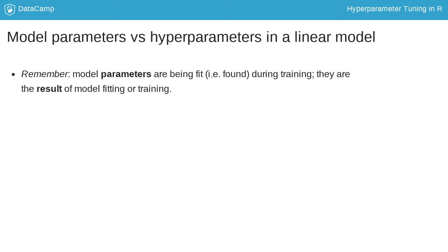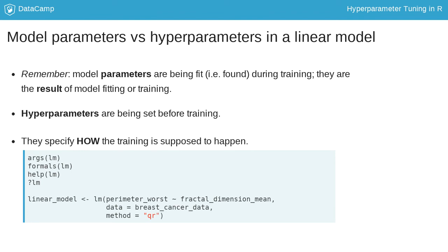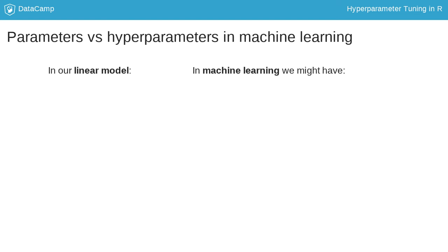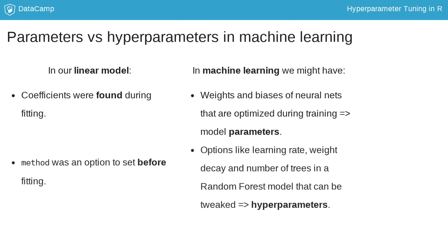But what about hyperparameters? Hyperparameters are defined before training. They specify how the training is supposed to happen. This means they define options and function calls. We can find out which options to define by looking at the arguments or formals of a function, or by going to its help page. In our linear model, method is a hyperparameter. So, to recap: model parameters were found during training, like coefficients. In machine learning, these could be the weights of a neural network. Hyperparameters were defined before training. These could be the learning rate in a neural network, or the number of trees in a random forest.